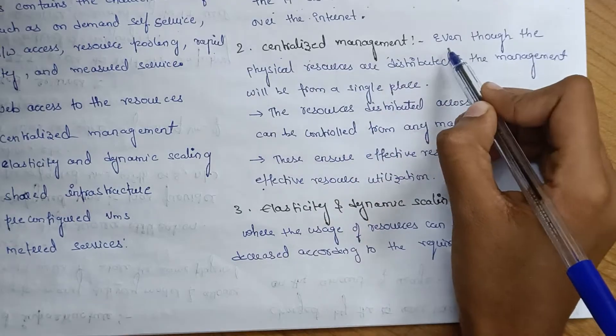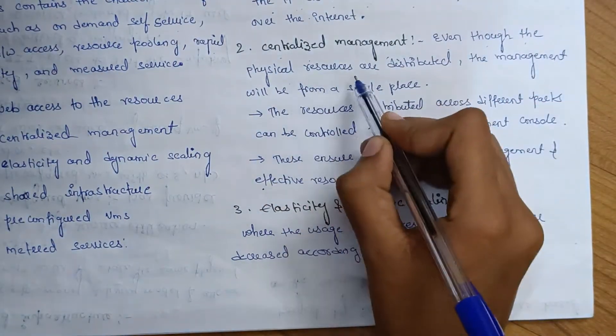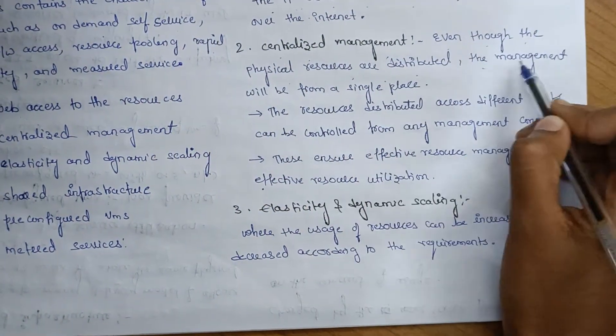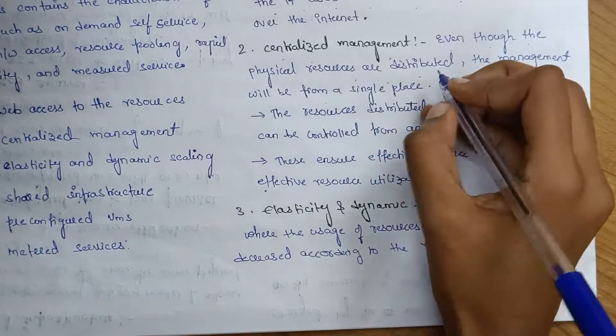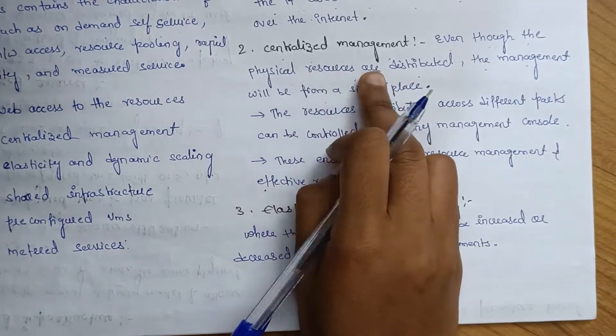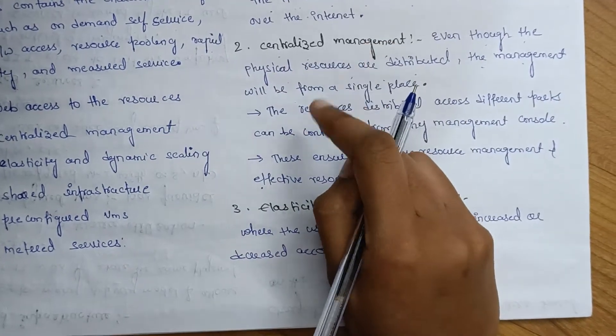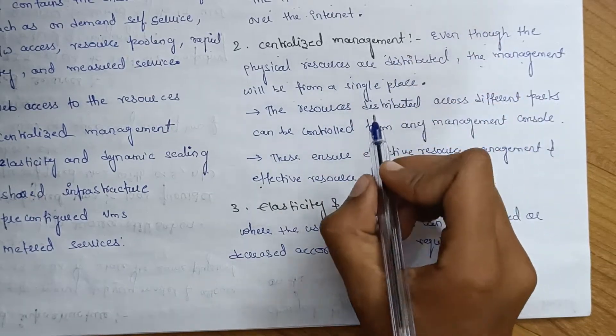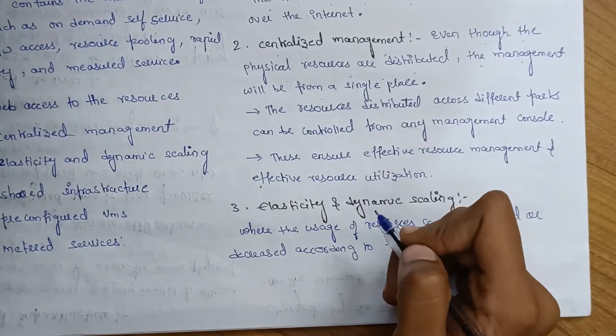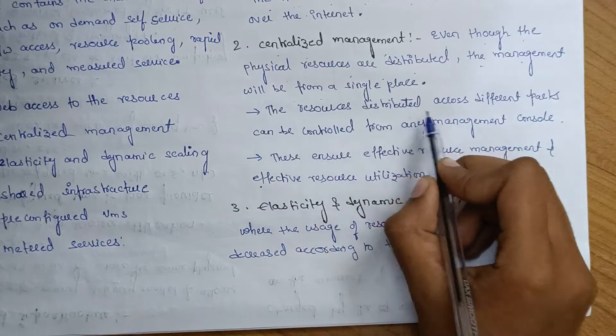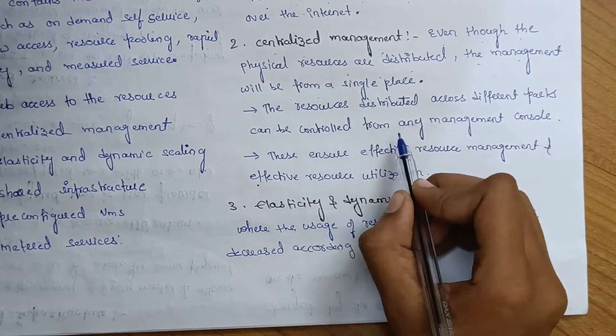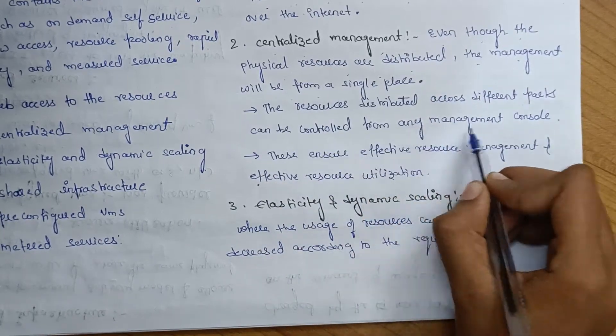Centralized management means even though the physical resources are distributed, the management will be processed in a single place. The resources are distributed across different parts but can be controlled from any management console.